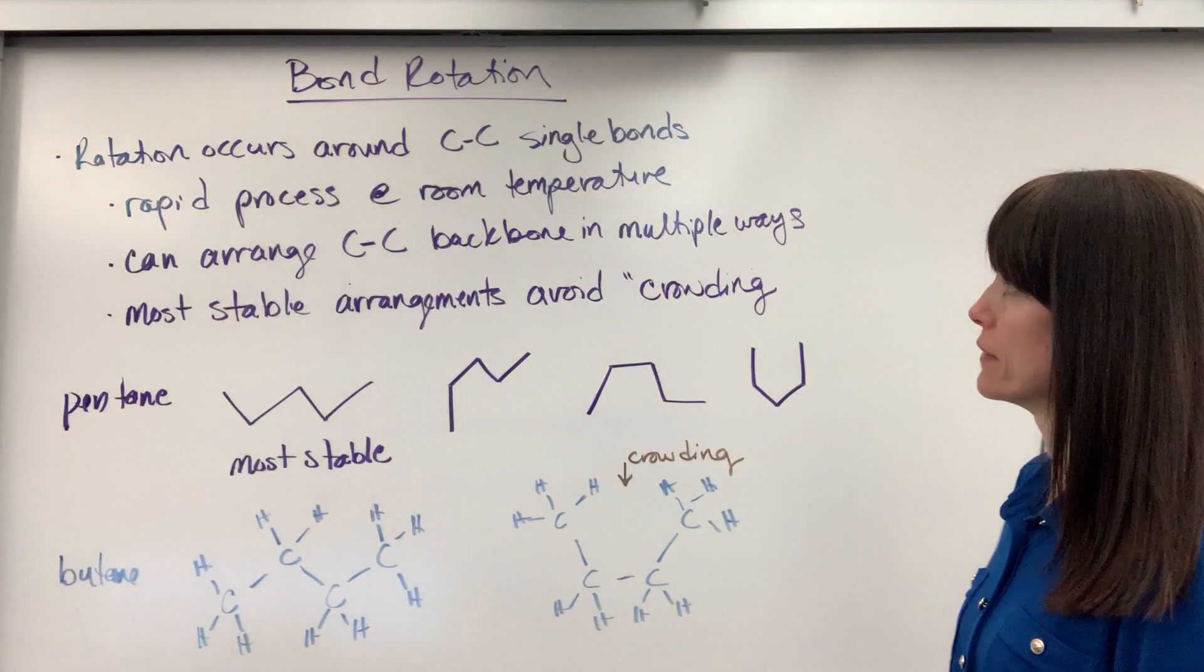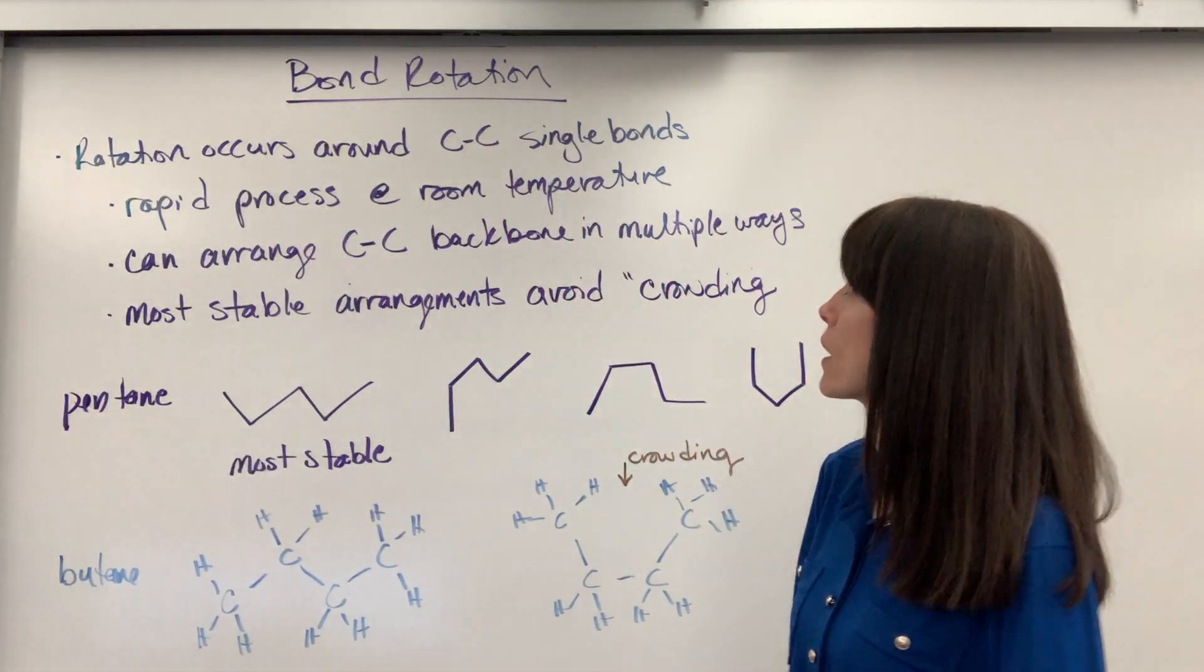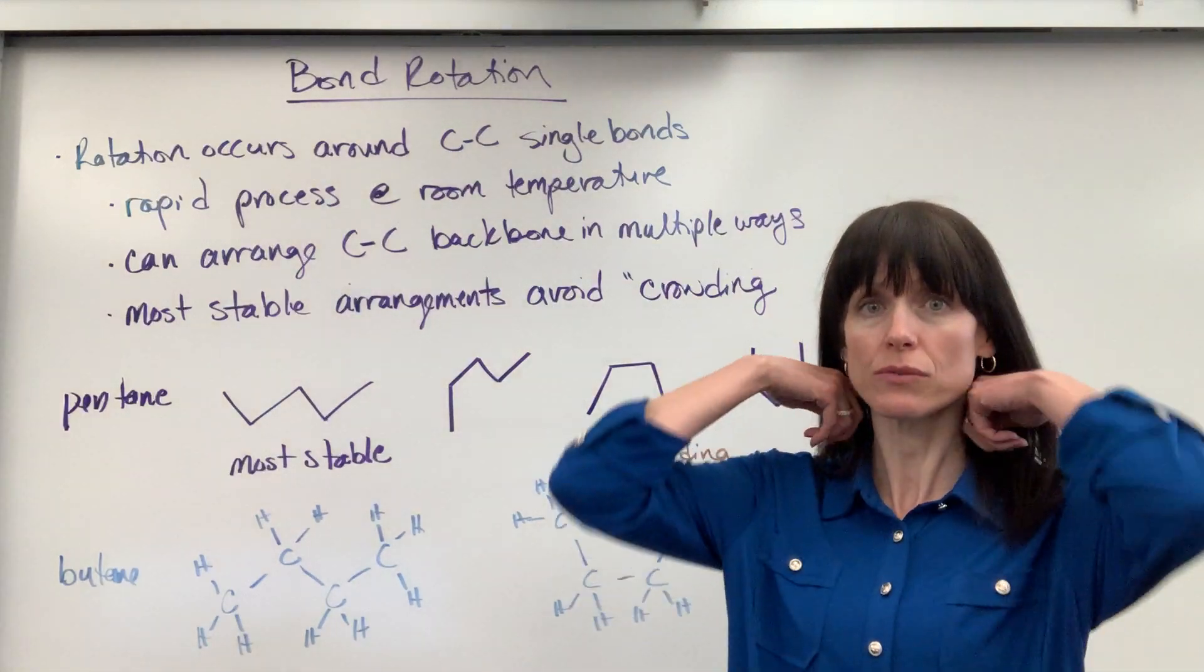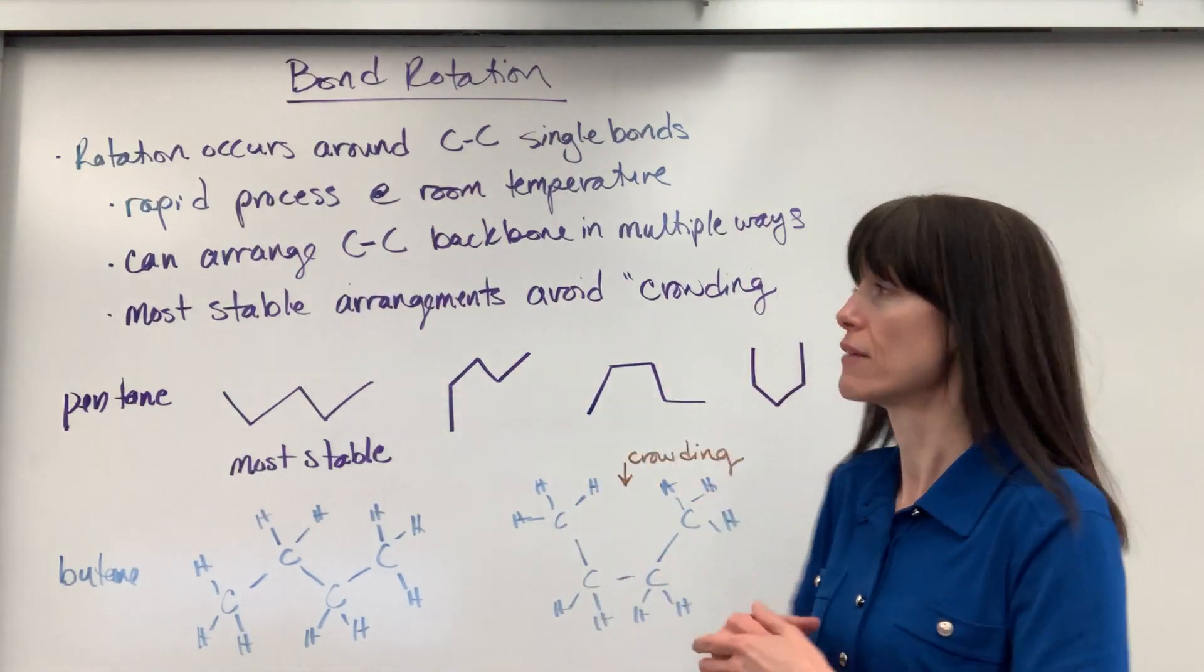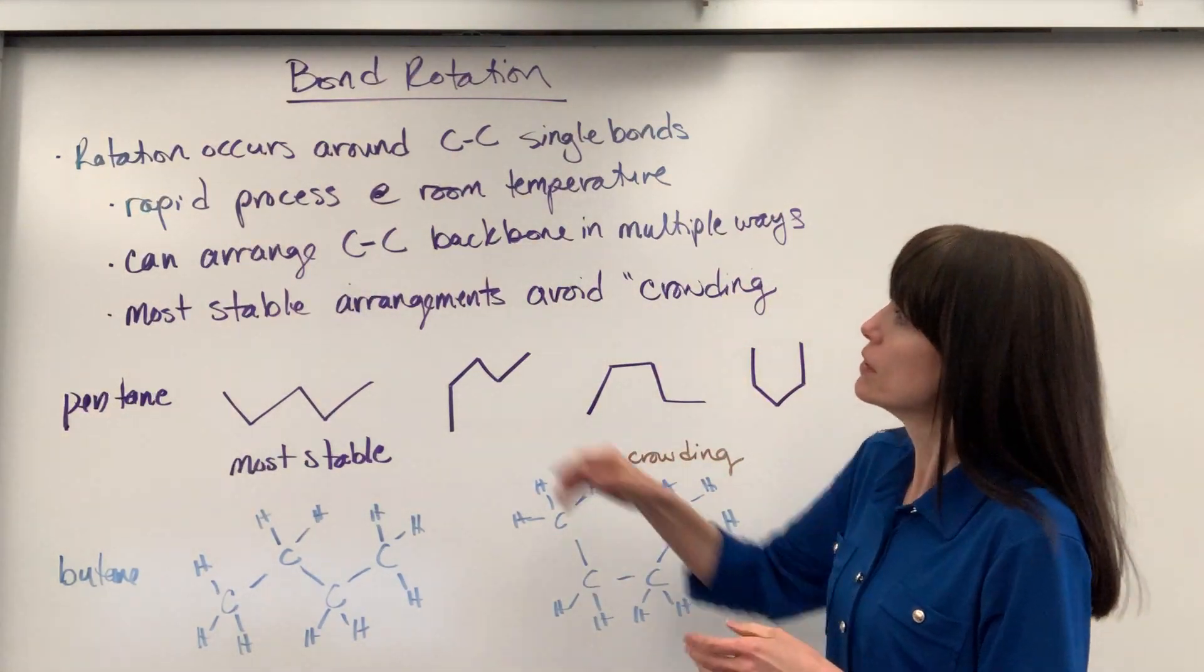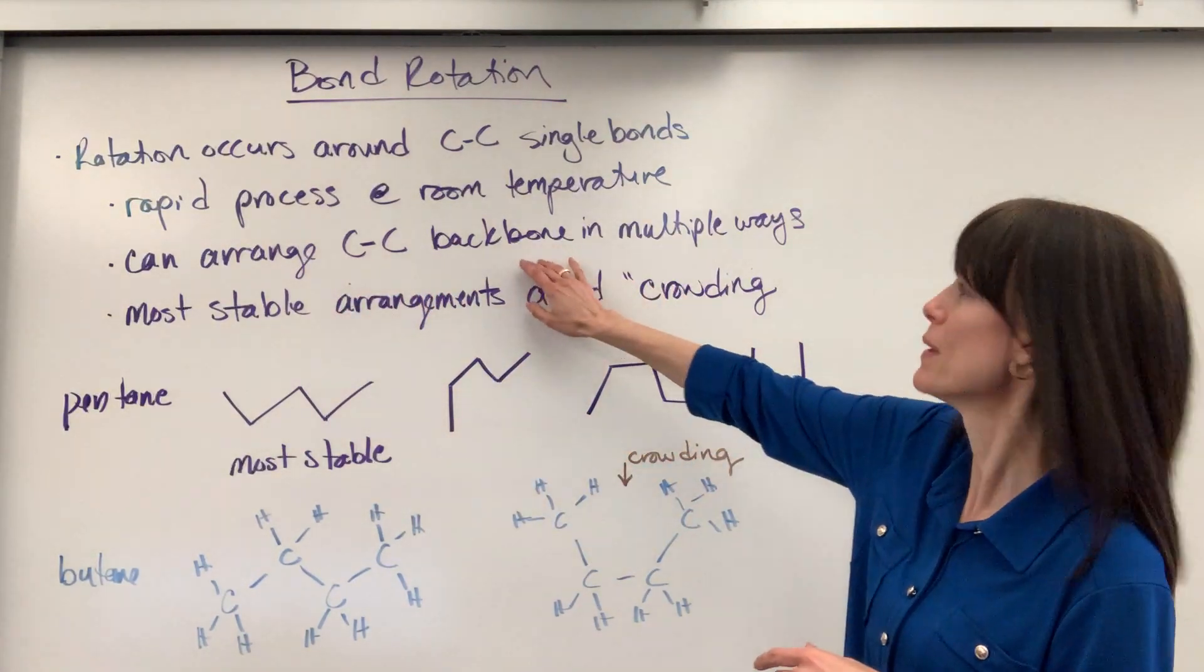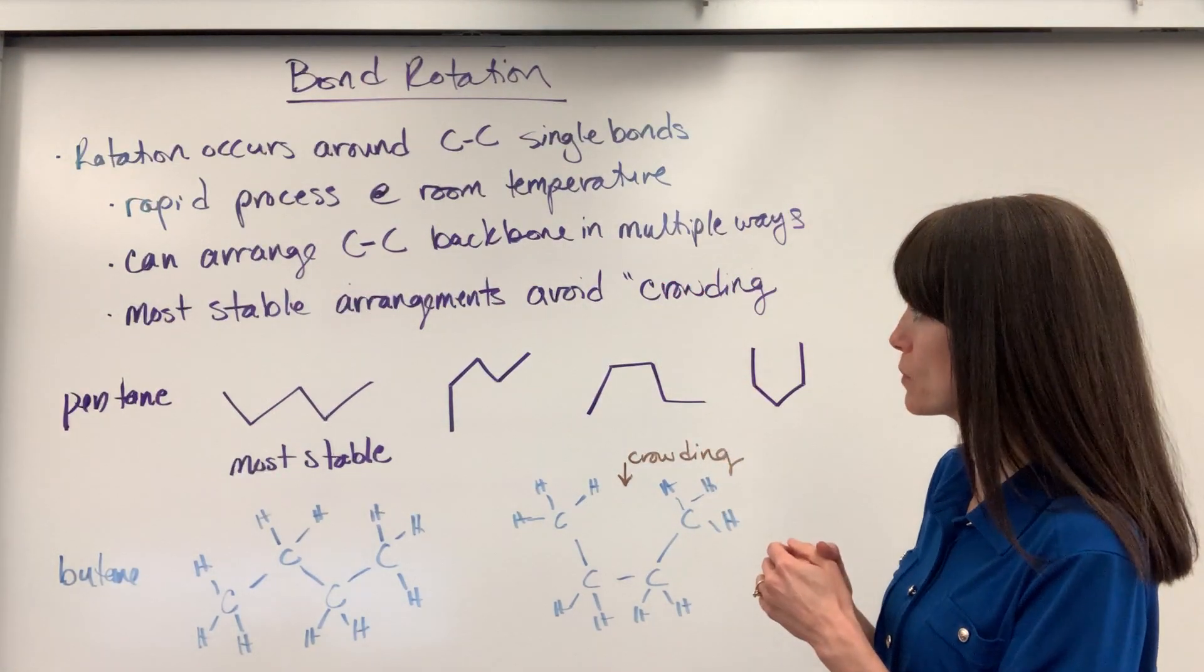So a couple of notes on this. Again, rotation occurs around the carbon-carbon single bonds. It's a rapid process at room temperature. So even at room temperature, those bonds can have a lot of rotation. That means that we can arrange carbon-carbon bonds, that backbone, in multiple ways. And I'm going to show you a couple of those ways.